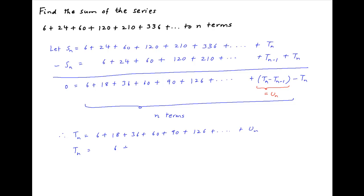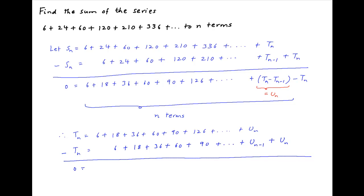Now rewrite this expression by staggering all the terms on the right hand side by one position. And now take the difference between the two expressions. The left hand side is equal to 0 and the right hand side is equal to 6 plus 12 plus 18 plus 24 plus 30 plus 36 plus and so on, and the nth term on the right hand side is equal to Un minus Un minus 1, and the last term is minus Un.